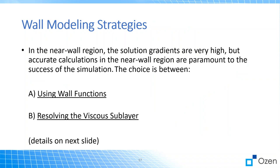You can use wall functions or resolve the viscous sublayer. In both cases, you need to pay attention to the size of your first layer of boundary layer inflation — where elements at the surface are extruded away at specific thicknesses, with a specific number of layers and a specific growth rate for each successive layer. These choices are made in your meshing application, and the mesh approach should correspond to whether you're using wall functions or resolving the viscous sublayer.